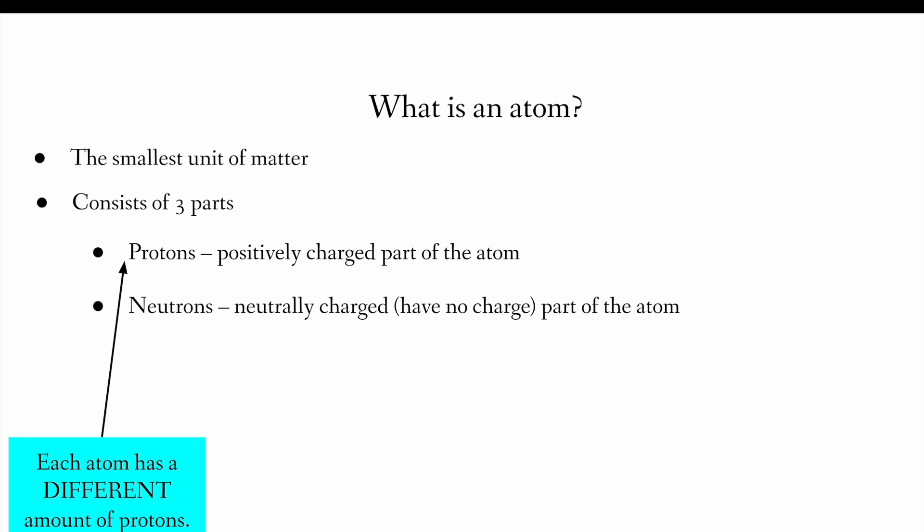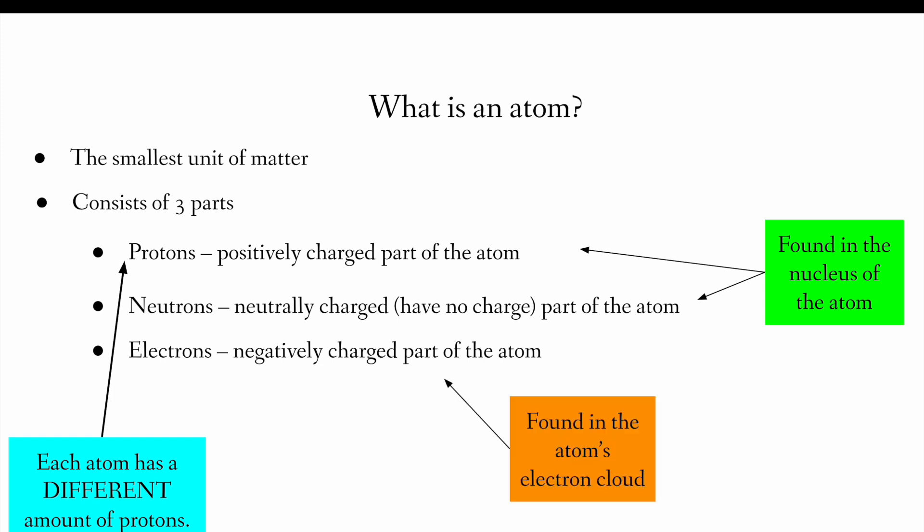Then we got neutrons. These are the neutrally or have no charge part of the atom. And the electrons are the negatively charged part of the atom. The protons and the neutrons are found in the nucleus of the atom. The electrons are found in the atom's electron cloud. In order to understand a big part of the periodic table and how it's laid out, it's really important to understand what protons and neutrons are.